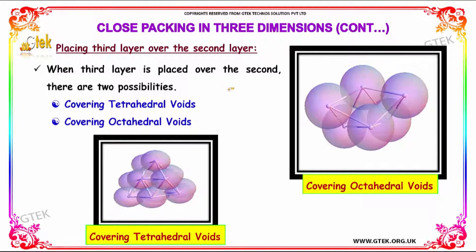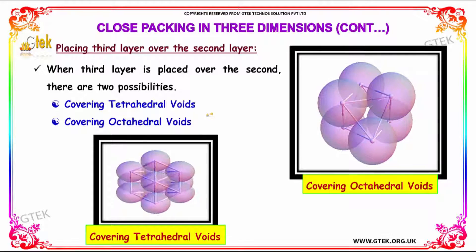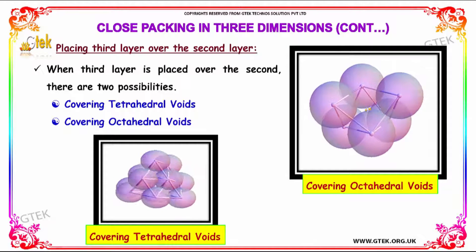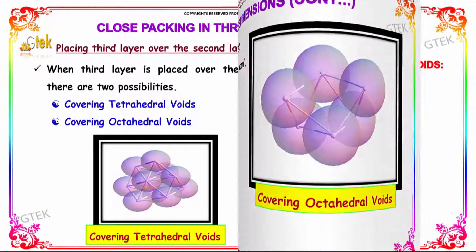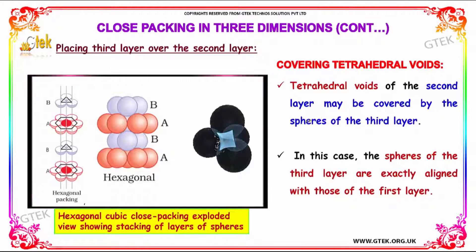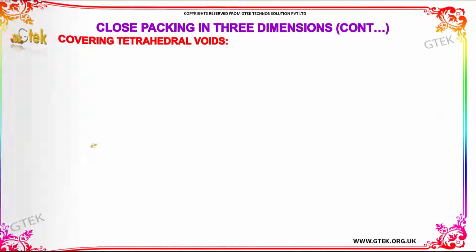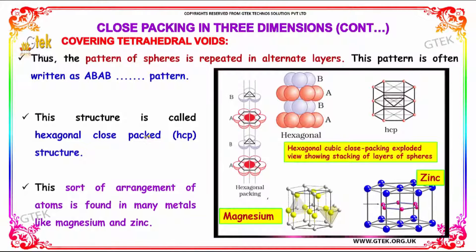When the third layer is placed over the second layer, there are two possibilities. The tetrahedral voids of the second layer may be covered by the spheres of the third layer. In this case, the spheres of the third layer are exactly aligned with those of the first layer, and the pattern of spheres is repeated in alternate layers. This pattern is written as ABAB.